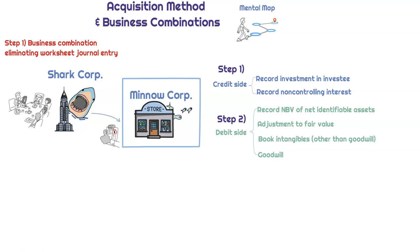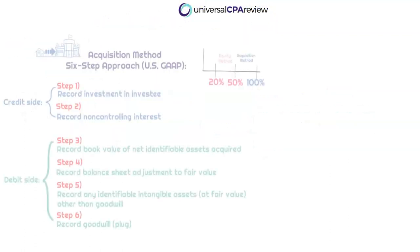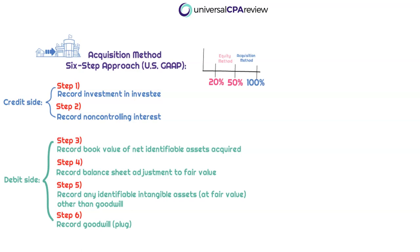Don't let these foreign journal entry terms spook you — terms like eliminating journal entry or worksheet journal entry. Don't let that bother you. Just focus on the journal entry itself and associate it with the acquisition method. This journal entry has six steps to it. Before we walk through the six steps, let's understand each of these entries at a high level. We need to understand what it is we're actually recording so that you're not just memorizing words — you actually understand the why.